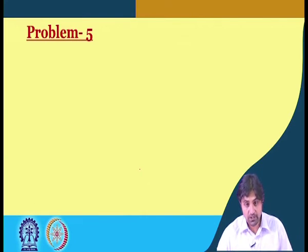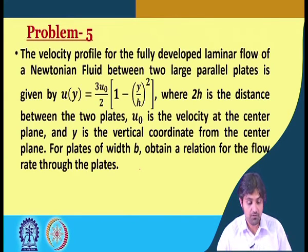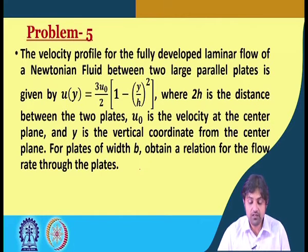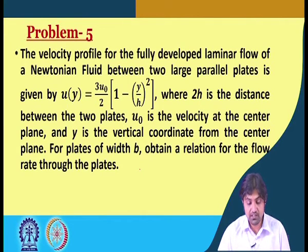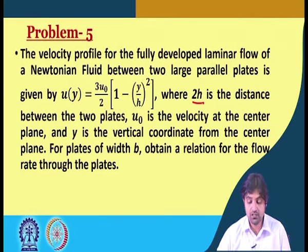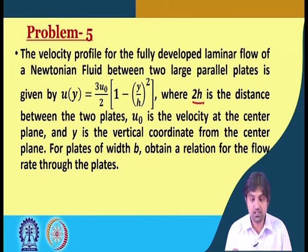We will now solve one more problem — the last problem in the series on laminar flow between plates. It is a slightly inquisitive question. The velocity profile for fully developed laminar flow of a Newtonian fluid between two large plates is given as u(y) = (3u₀/2) · (1 − y²/h²), where 2h is the distance between the two plates, u₀ is the velocity at the centre plane, and y is the vertical coordinate measured from the centre plane.